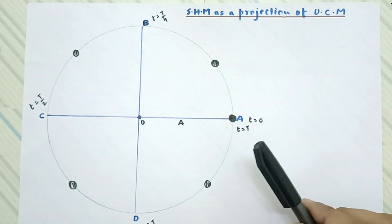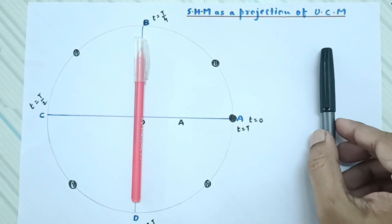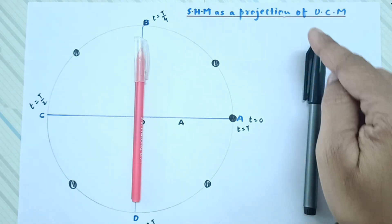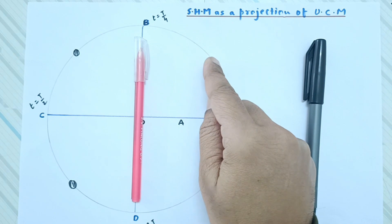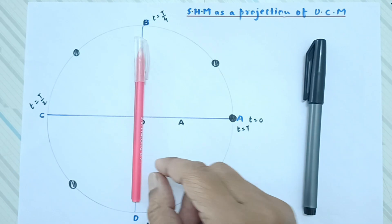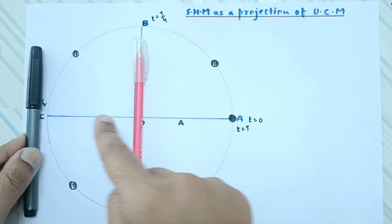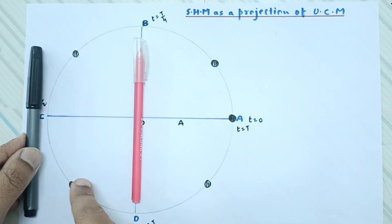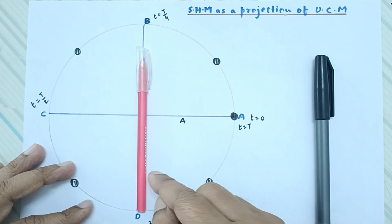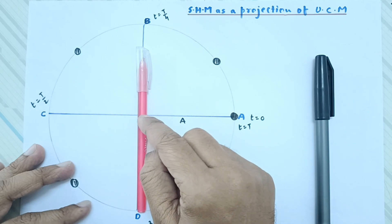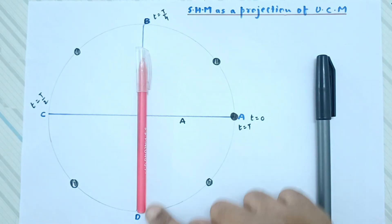Now consider a small screen along the Y-axis diameter, and a tube light emitting light horizontally toward it. When the tube light projects light, the shadow of the particle falls on the screen. As the particle moves around the circle, the shadow moves: it goes up to the maximum, then comes back down, then merges with the particle position. The shadow moves up and down along the diameter on the Y-axis.